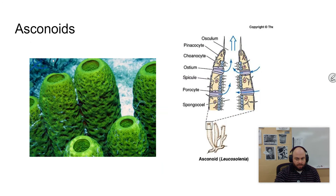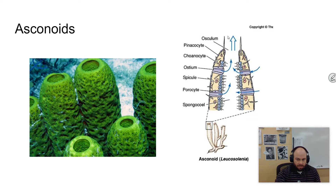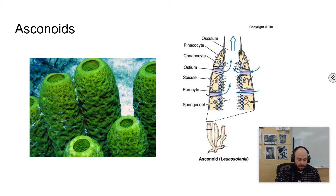There are three basic canal systems. The first is the asconid canal system — the simplest kind. Water is taken in through the dermal ostia and expelled out a large osculum. You could actually feel the water coming from it if you put your hand over it. Choanocytes line the inner cavity called the spongiocele. It's not a true body cavity because sponges don't have true tissues.